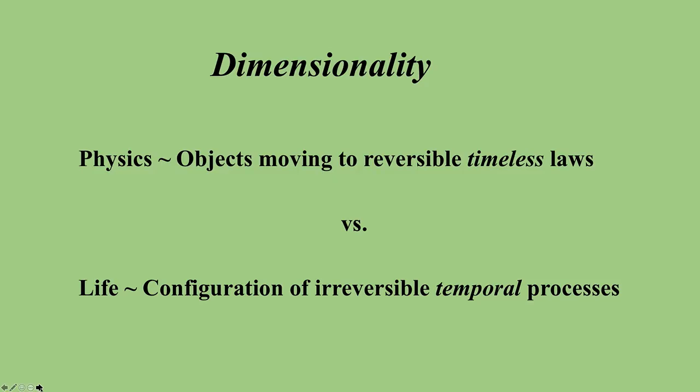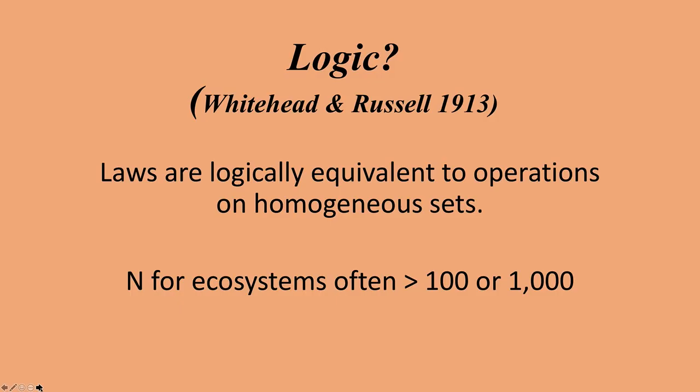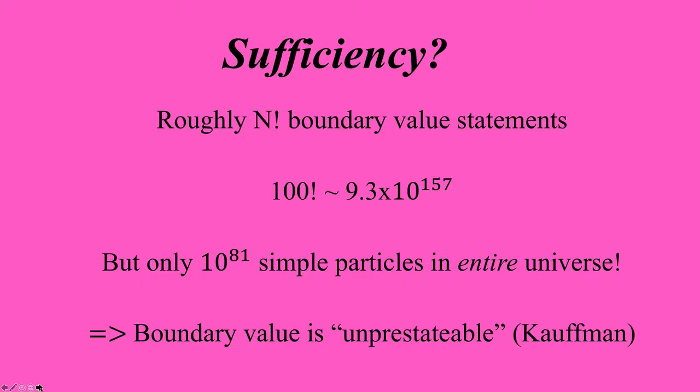Take dimensionality, for example. Physics is all about objects moving according to timeless laws. However, life is not an object, but a process. In fact, it's a configuration of irreversible temporal processes. Logic? Well, long ago, Whitehead and Russell proved that the laws of physics can operate only on homogeneous variables. Living systems, however, are massively heterogeneous by comparison, which leads to sufficiency.